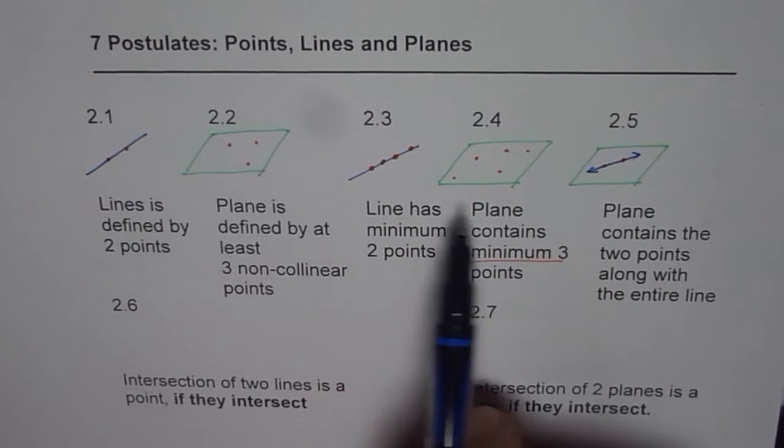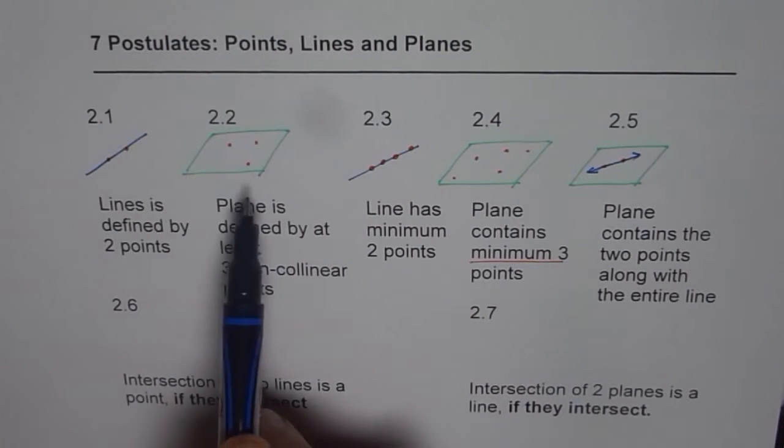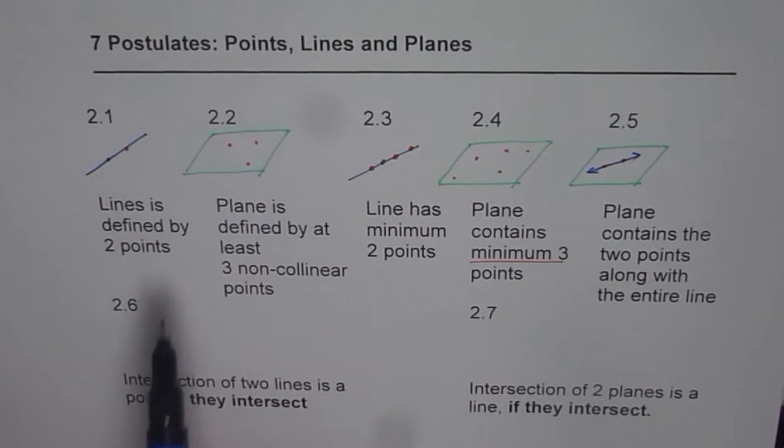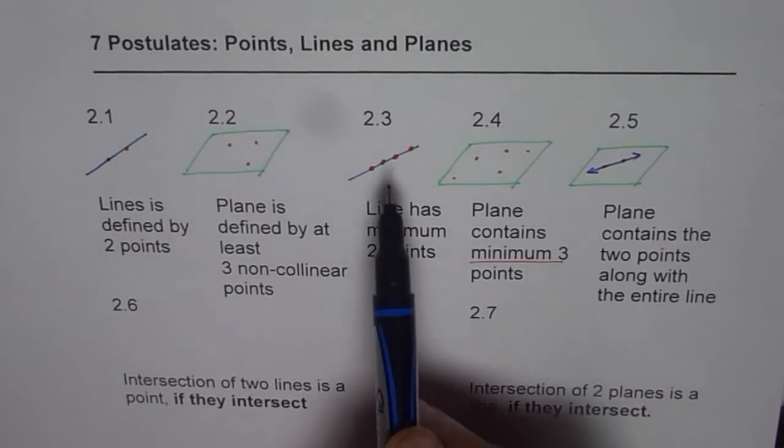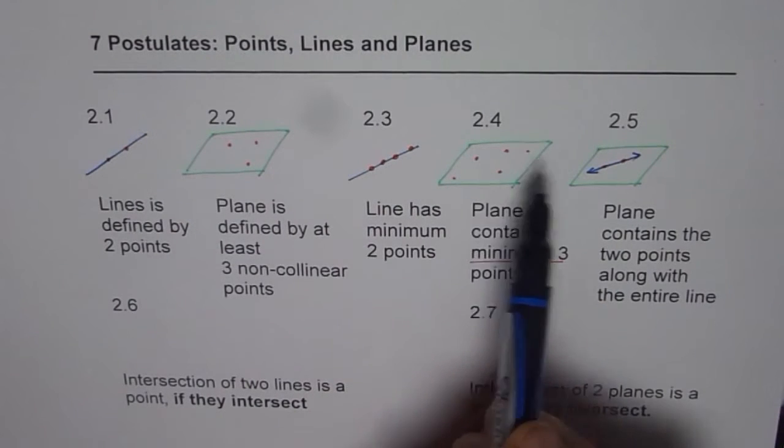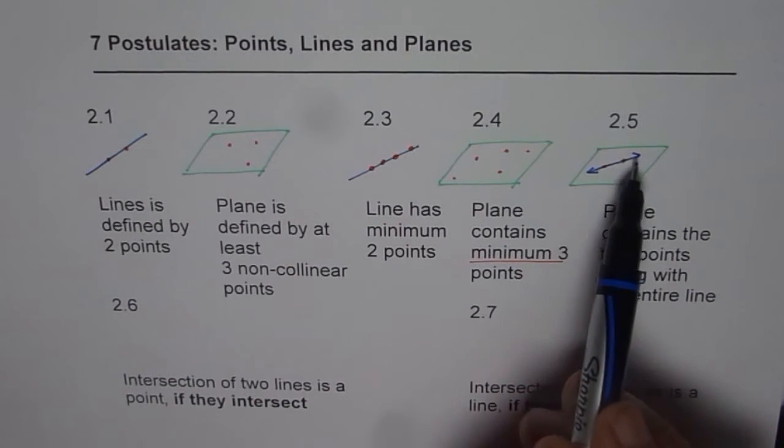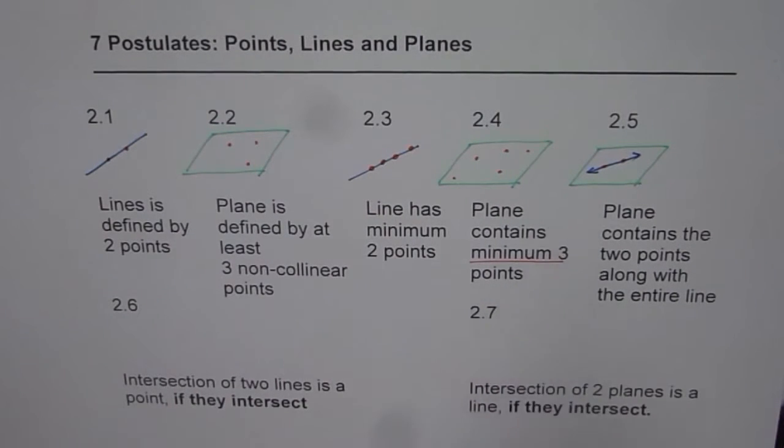So let us summarize the first five. The first one is that line is defined by two points. A plane is defined by three points, that is two. Third one is line has minimum two number of points. Plane has minimum three number of points. A plane not only contains two points it contains the whole line which is having those two points. These are first five and sixth and seventh are based on intersection.